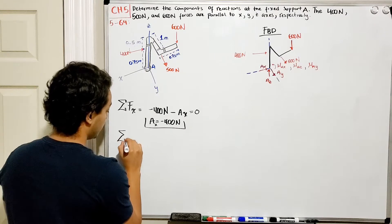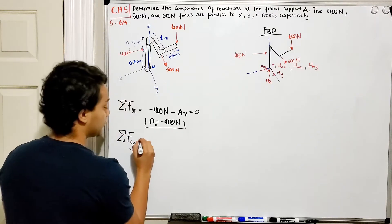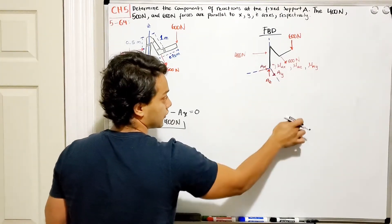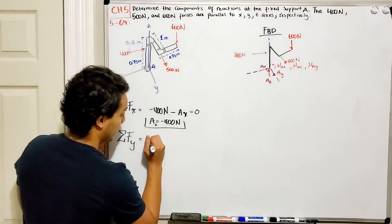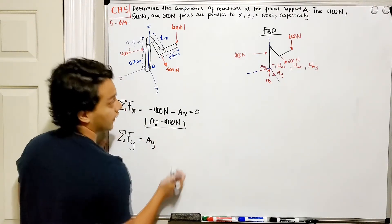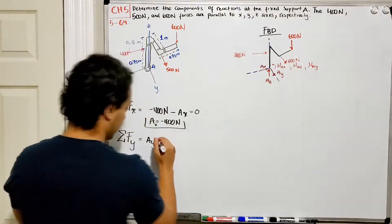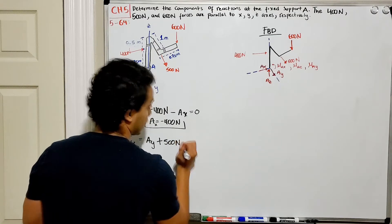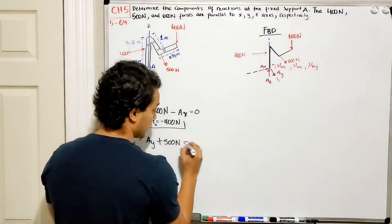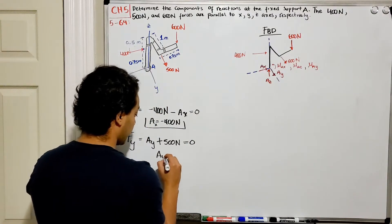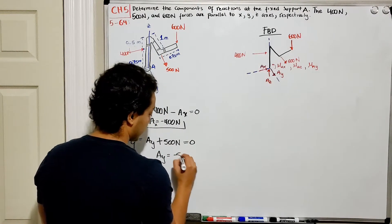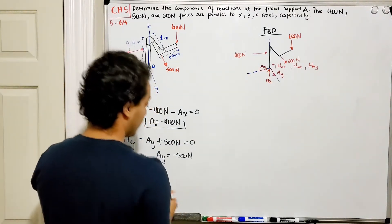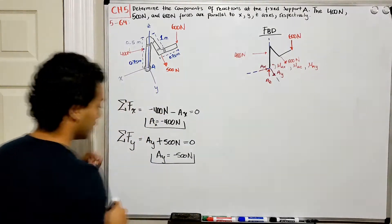Now we do the summation of forces in the Y direction. I have AY acting in the positive Y direction, plus 500 Newtons also going in the Y direction. Setting this equal to zero, AY equals negative 500 Newtons, meaning AY is actually going in the negative direction. That's our second reaction.